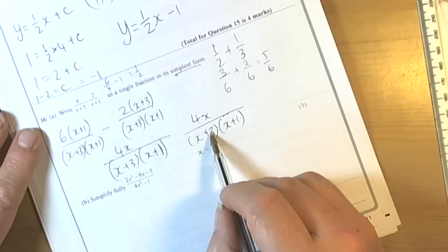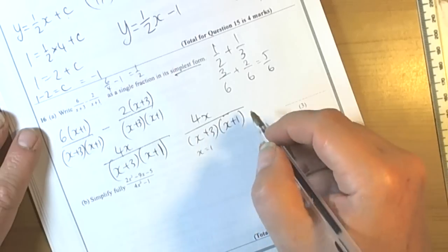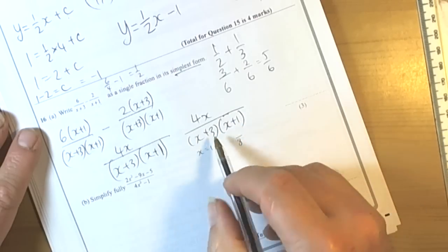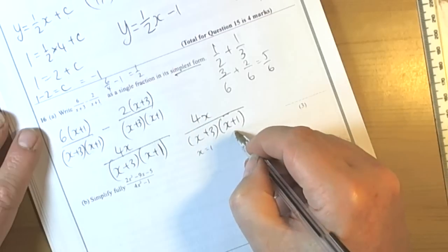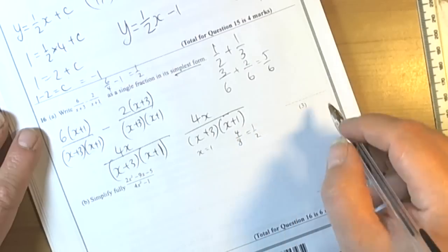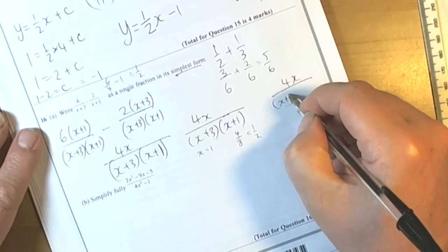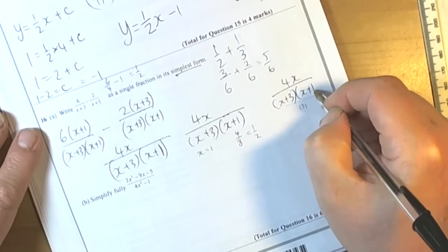So let's have a look. 1 plus 3 is 4, 1 plus 1 is 2, 4 times 2 is 8, so we're going to have 8 on the bottom, and 4 times 1 is 4. So 4 eighths cancels to 1 half. So both of these gave us a half, so we're going to be quite confident that the final answer was 4x over x plus 3 times x plus 1.